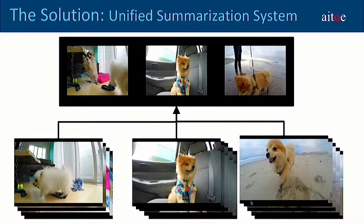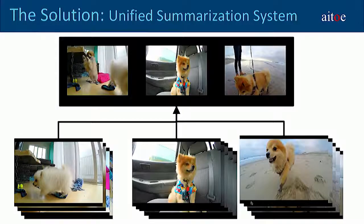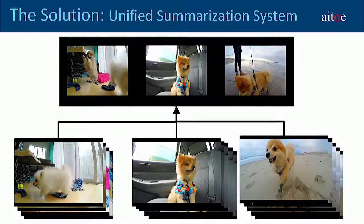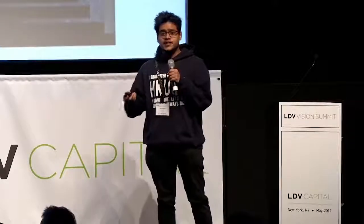To solve this problem, we've built a unified summarization system. It tries to capture diverse and representative content in order to create a visual summary of any long video in a matter of minutes. We also do summarization on the entity level — such as objects, people, and faces — and not only on the frames.